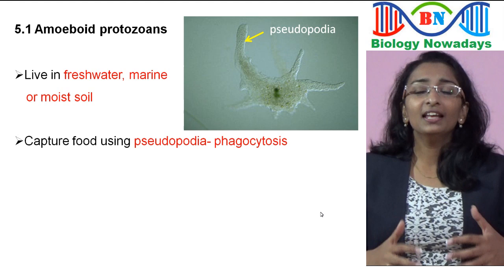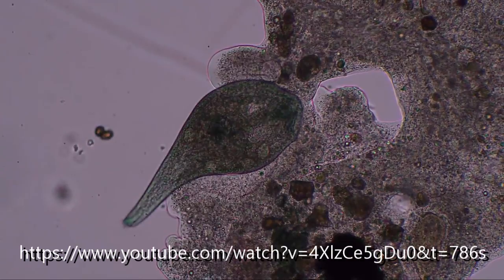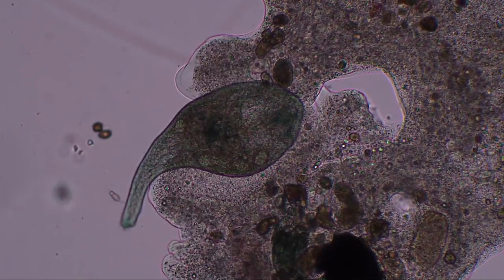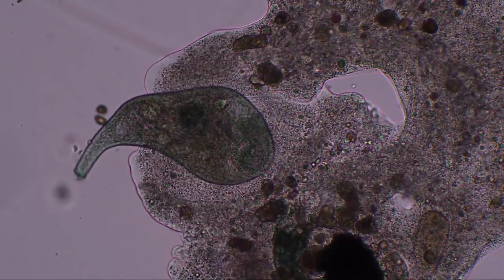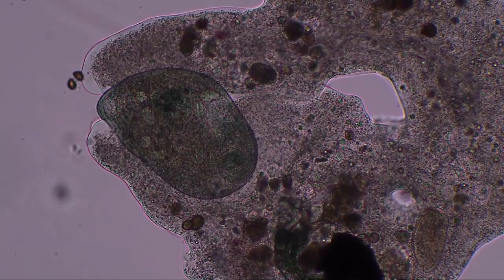For movement as well as to capture food, they use pseudopodia — meaning false feet. They can extend pseudopodia in any direction and slowly engulf food. This kind of engulfing food particles by a cell is called phagocytosis. Let's see a part of another YouTube video so that we can understand phagocytosis better. Here you can see how an amoeba extends its pseudopodia to catch its prey — it's really amazing to watch how a one-celled organism catches its prey. Check out the links in the description box below.